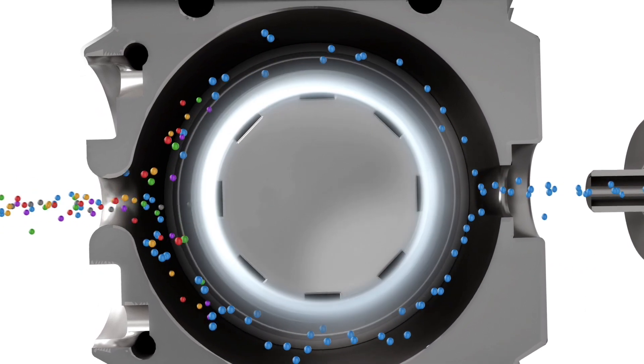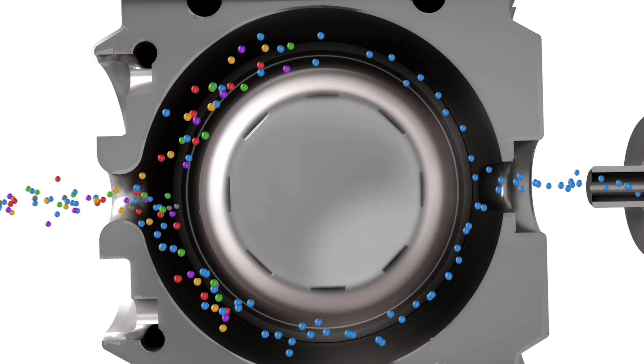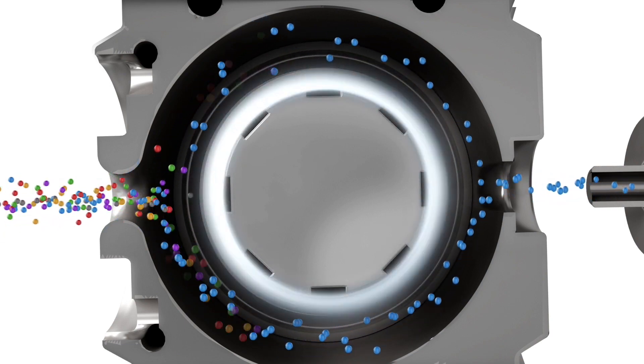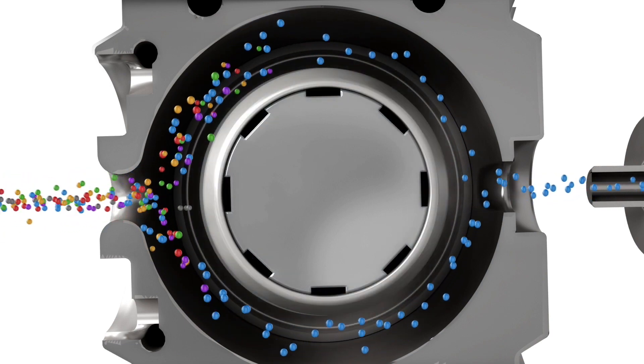Spatial separation of ions is based on their stability when traversing the interface. Only ions with a stable flight path exit into the mass spectrometer for detection and sequencing.